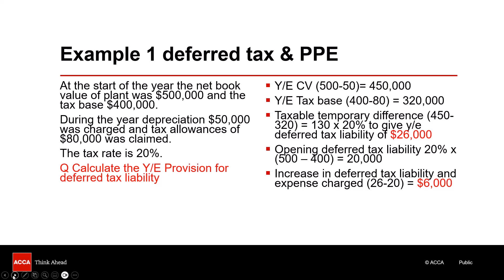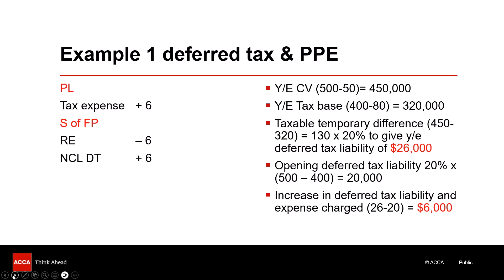Thinking about how this plays out in the financial statements: if this adjustment hadn't been made in question one and it related to the parent company, there'd be no impact on the non-controlling interest. The adjustment would be an additional deferred taxation liability of 6, and a reduction in group retained earnings of 6. Both adjustments are in the bottom half of the balance sheet, so the balance sheet would still balance. That's our first example — one down, two to go.